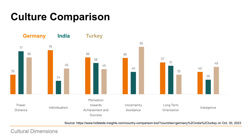On the bottom you see seven cultural dimensions Hofstede has researched, like power distance, individualism, motivation towards achievement and success, uncertainty avoidance, long-term orientation and indulgence. We won't go into detail about all of them, but if we look at power distance it's clearly visible that Germany is a much more egalitarian society with a score of only 35, compared to India or Turkey where a high power distance is widely accepted.